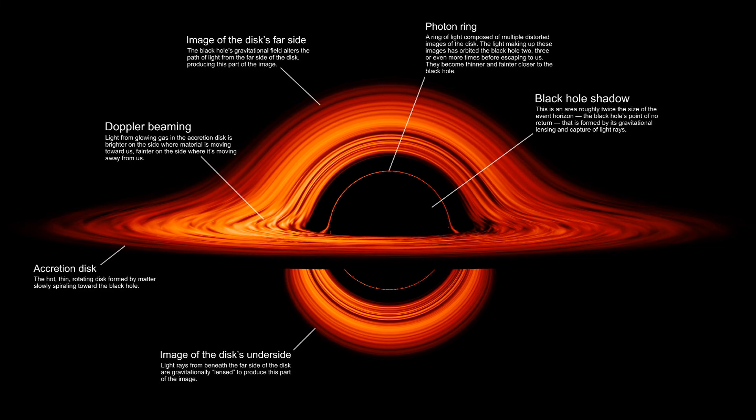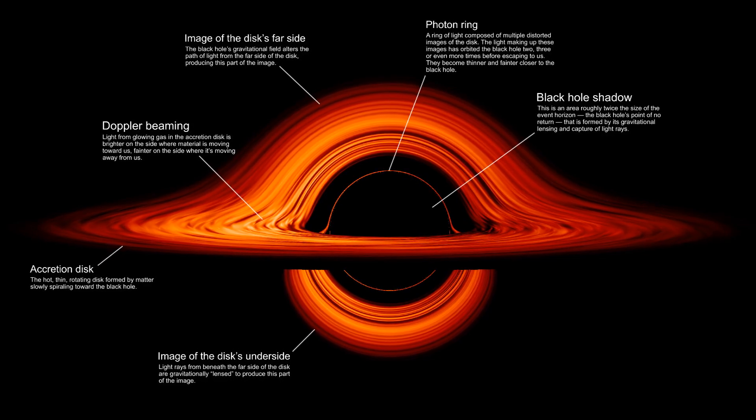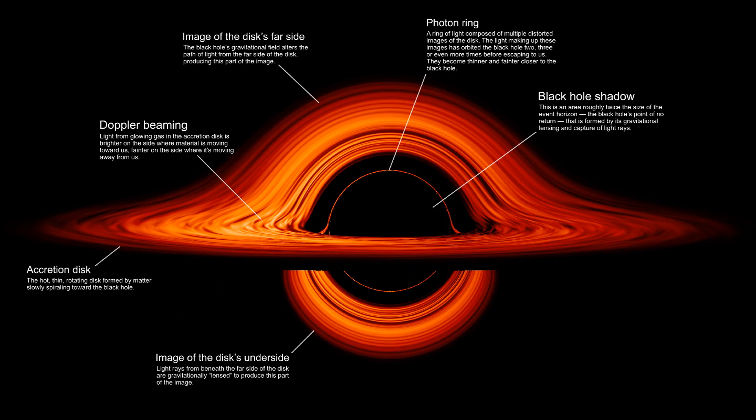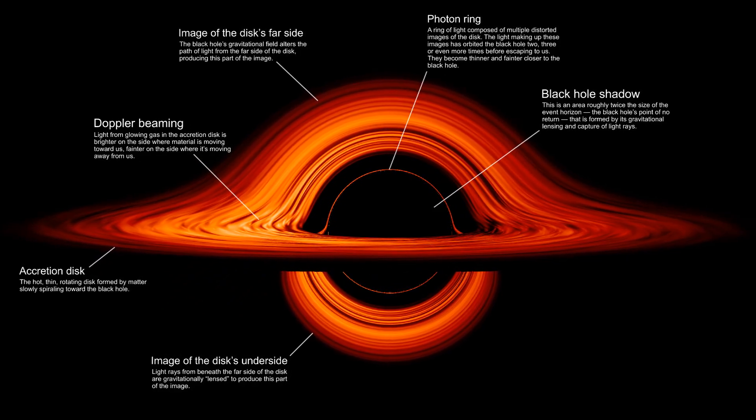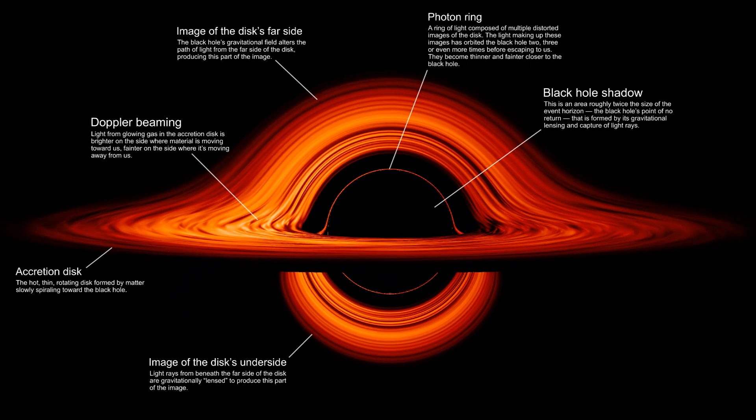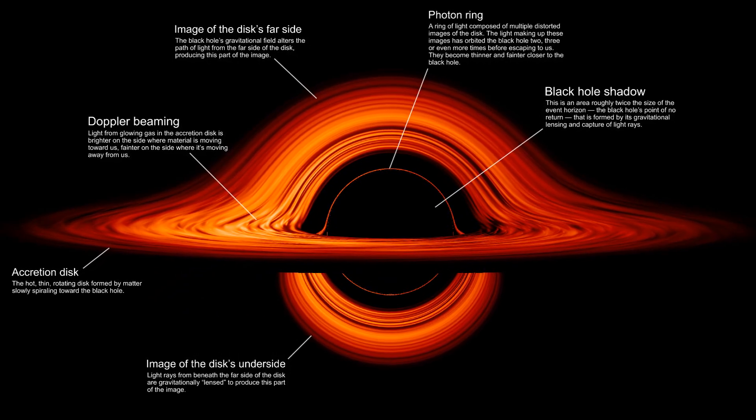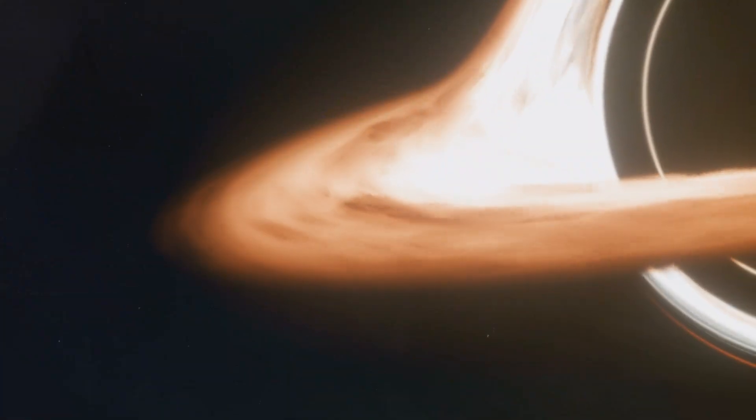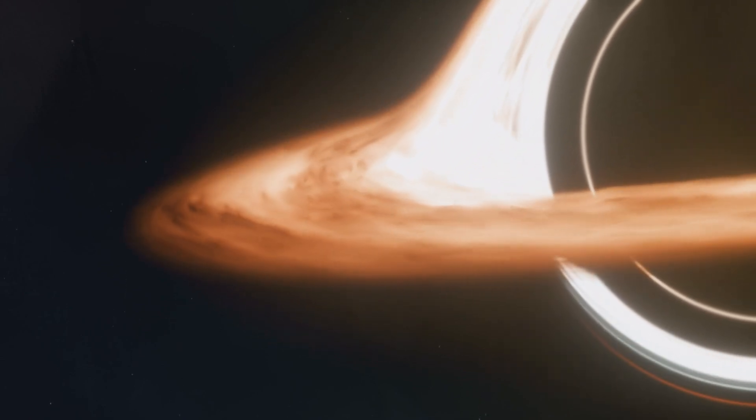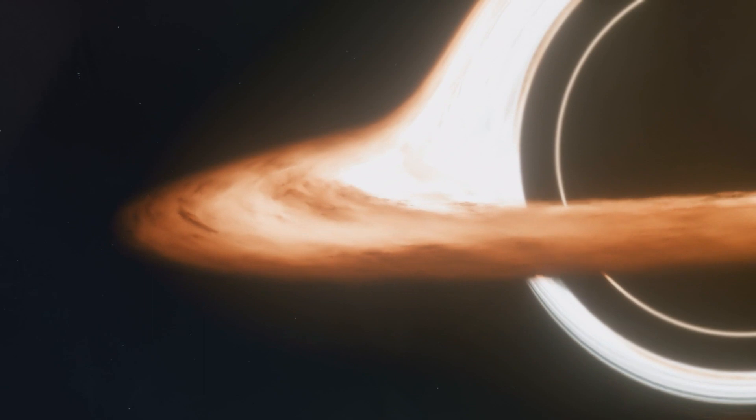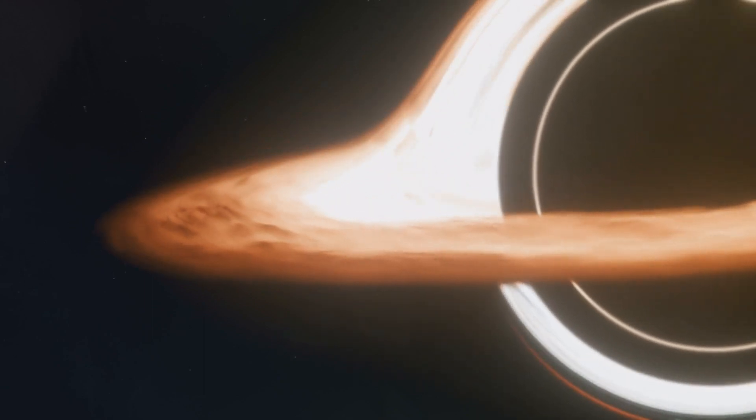The event horizon is a fundamental concept in astrophysics, specifically in the study of black holes. It represents a critical boundary surrounding a black hole beyond which no information, matter or light can escape and reach an external observer. Once any object or information crosses this boundary, it is said to have passed inside the black hole, and there is no known way for it to return or be observed from the outside.